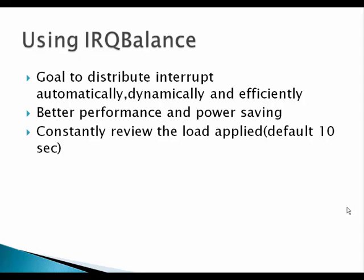The main advantage of IRQ balance is to distribute your interrupts dynamically, efficiently, and automatically among the available CPUs. For example, if you have two network interface cards and one is heavily loaded while the other is less loaded, IRQ balance monitors this and automatically assigns tasks accordingly. If the load reverses, IRQ balance adjusts automatically. That's why it is better not to manually bind interrupts to a particular CPU — IRQ balance handles this really well.